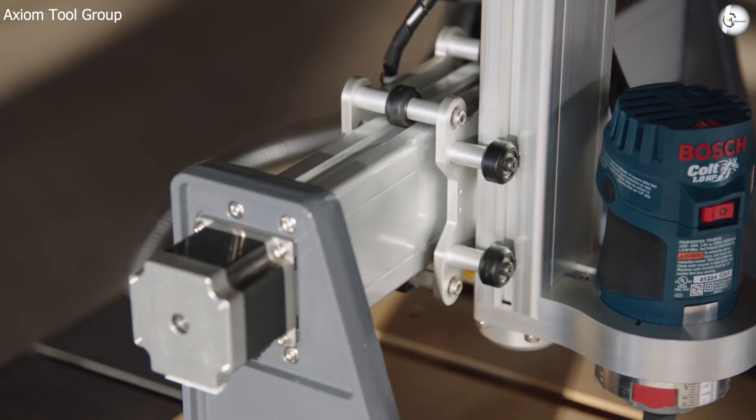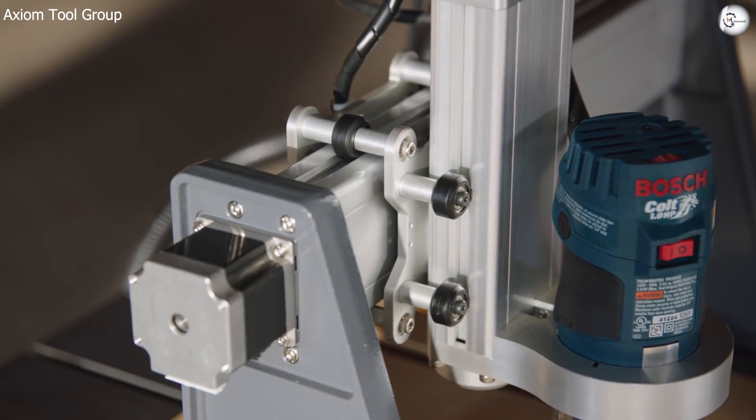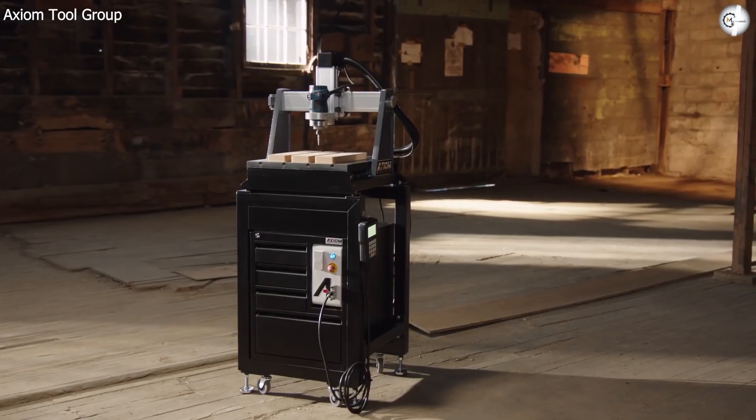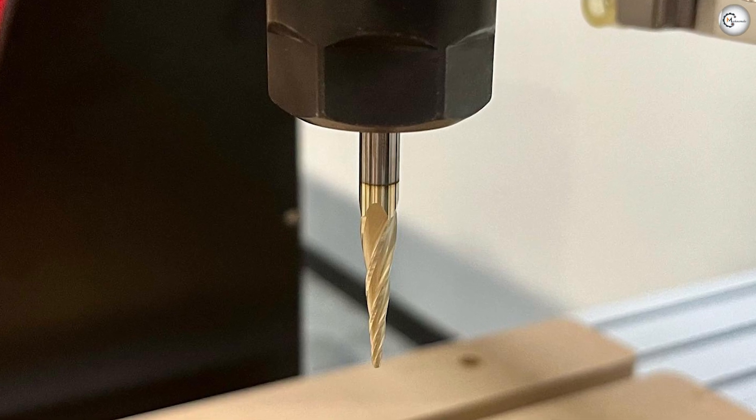Even though the Z-axis clearance is 6.5 inches, the maximum Z-axis travel is 6 inches, meaning you can place workpieces that are up to 6.5 inches thick but can only cut up to 6 inches of it vertically.